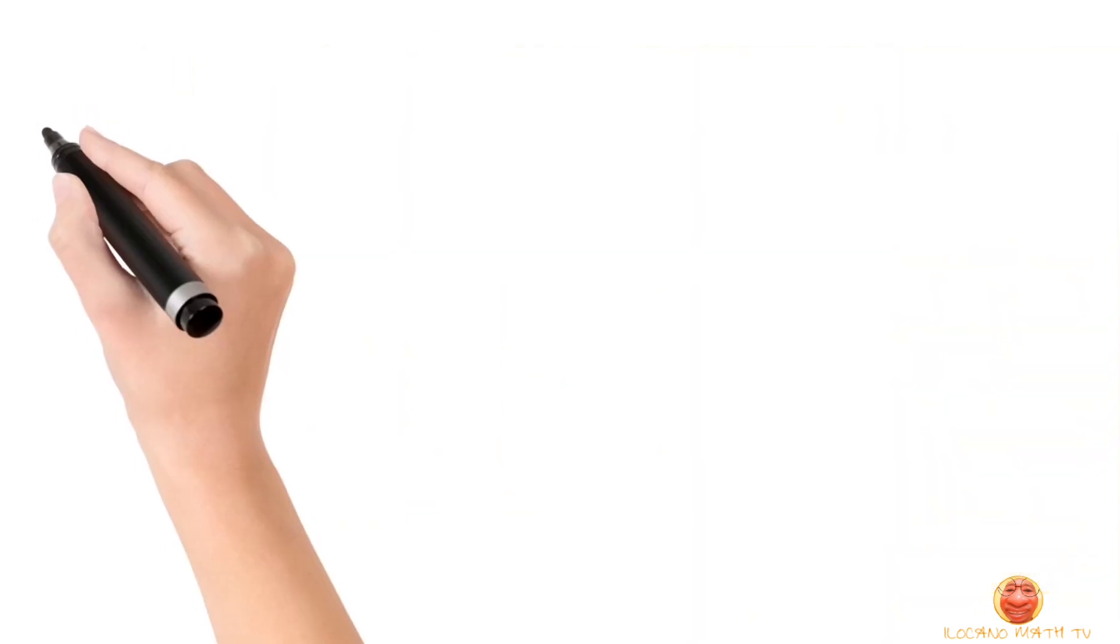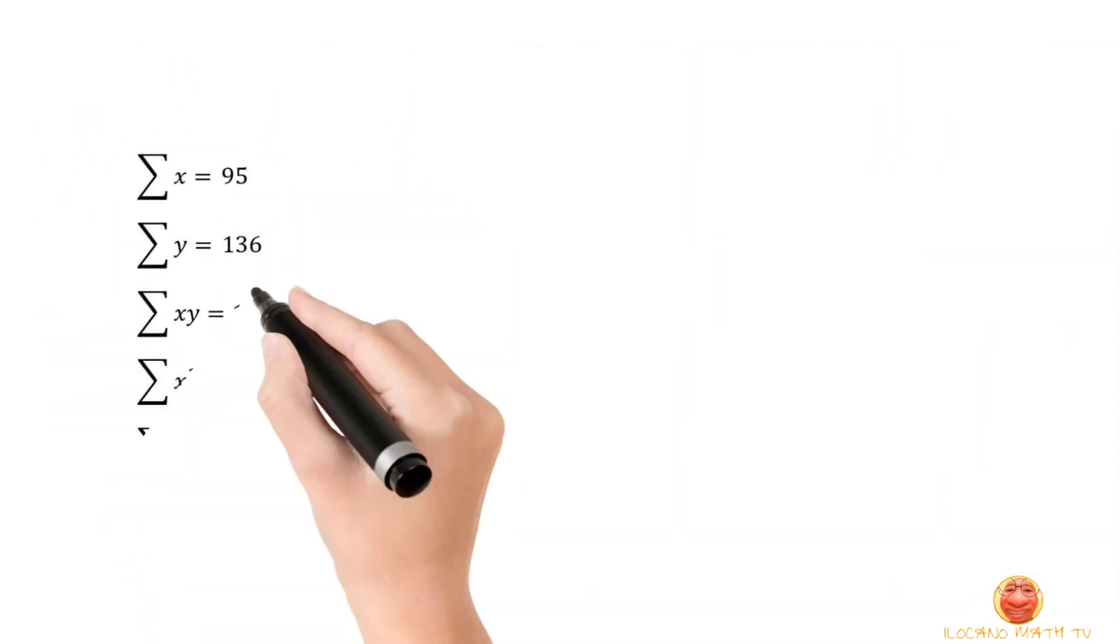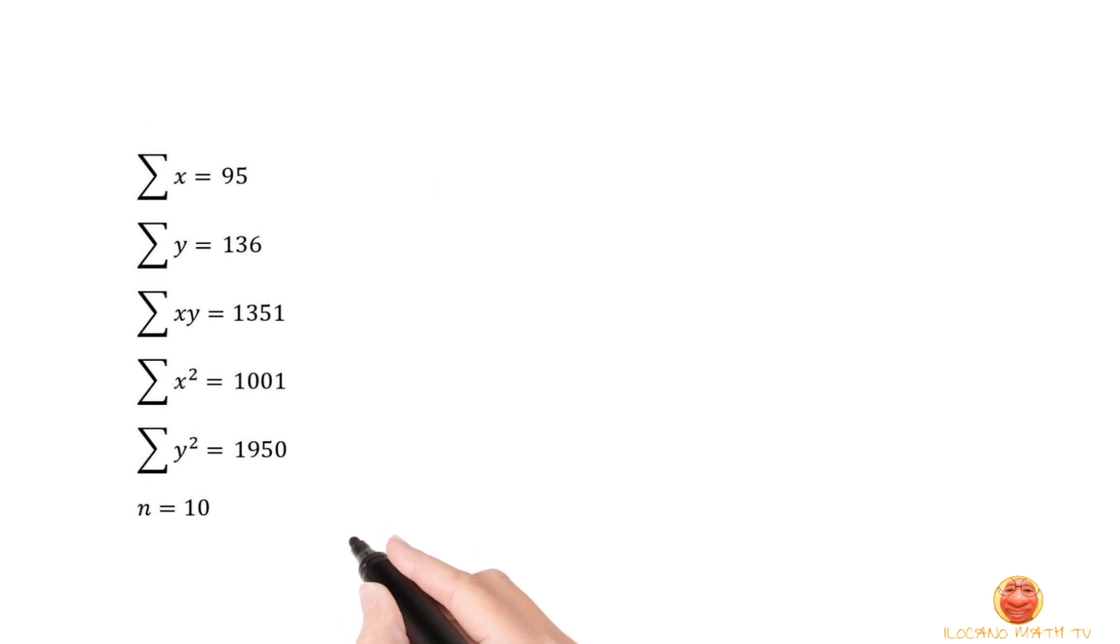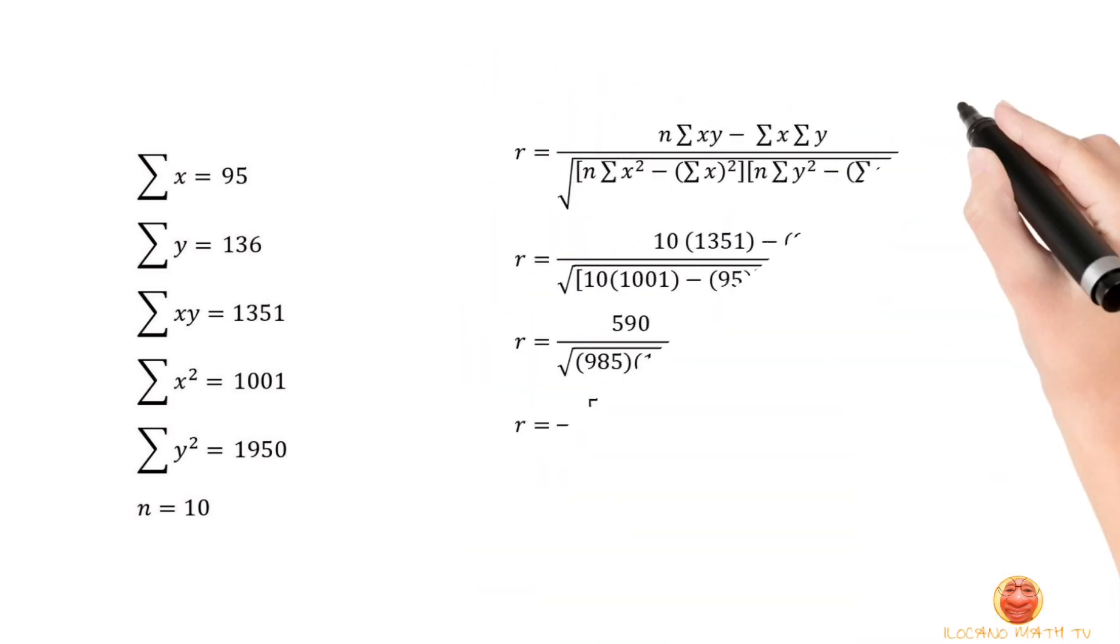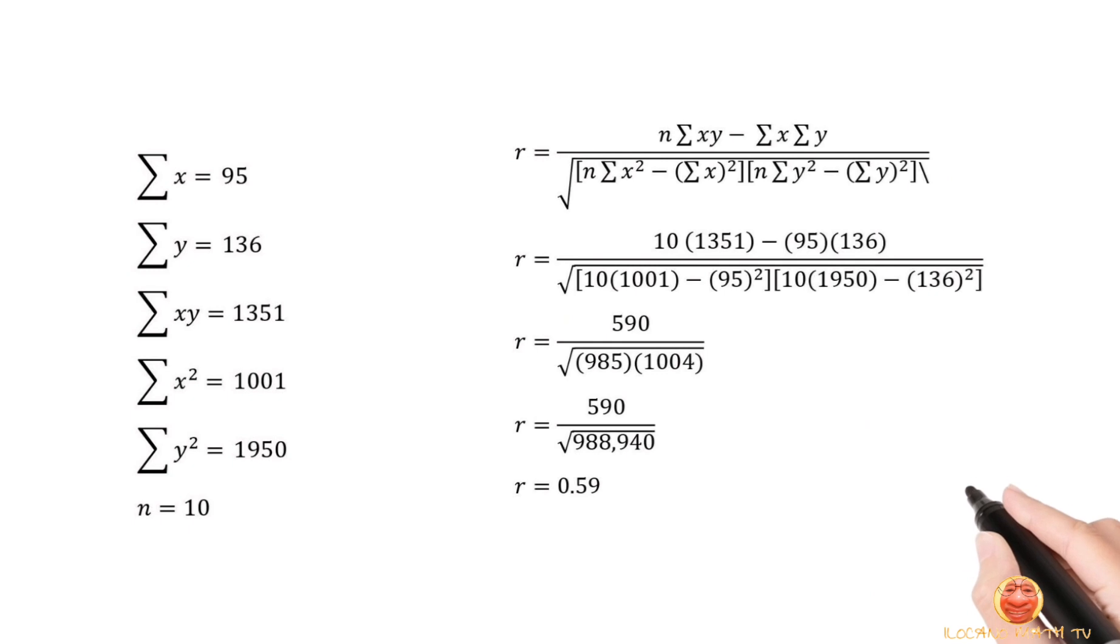So, what we need to solve using our formula is the summation of X, that is 95. Summation of Y, that is 136. Summation of XY, that is 1351. Summation of X squared, that is 1001. Summation of Y squared, that is 1950. And, lastly, our N, which is how many students we have, which is 10. So, after getting all the summation of our data values, we'll be using this correlation formula to find the relation of 20 item tests on 10 students for two subjects.